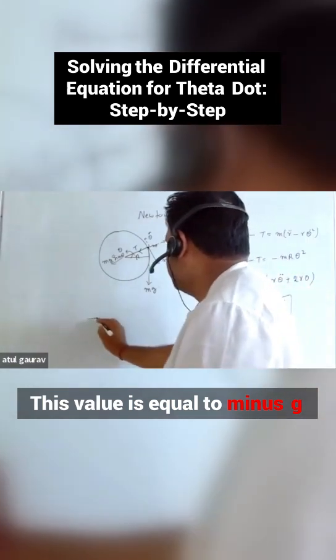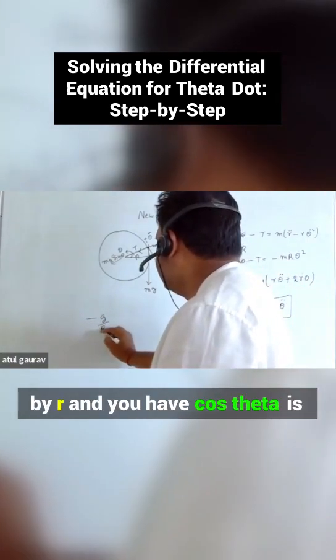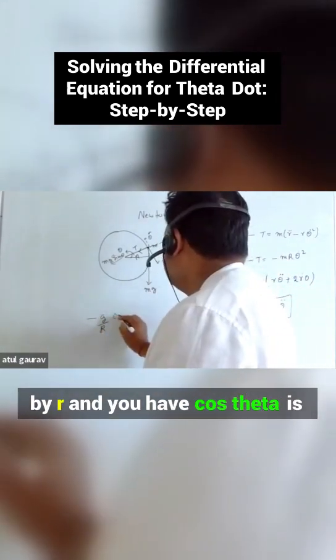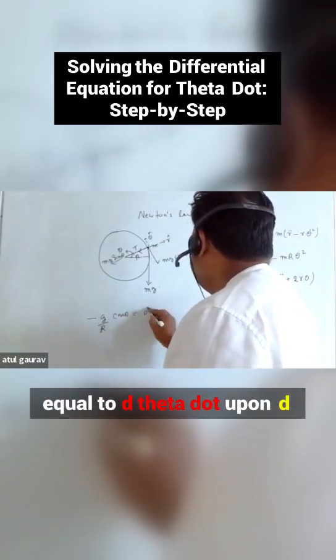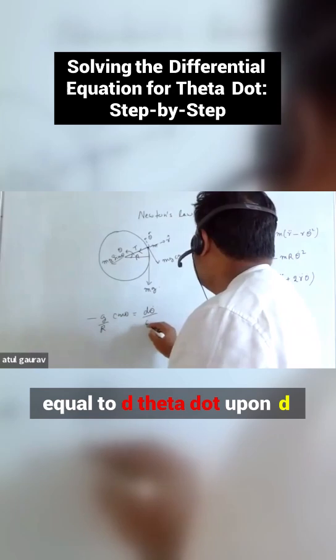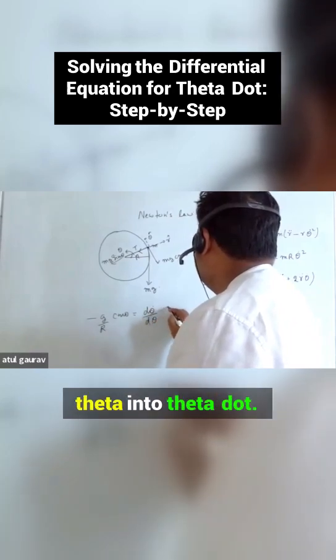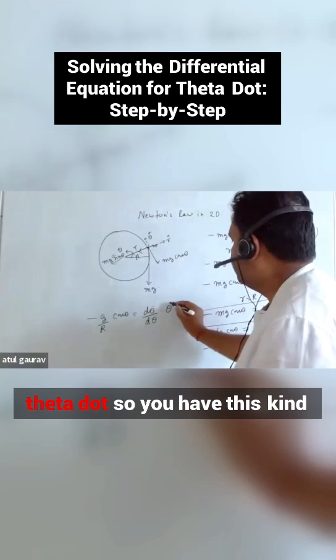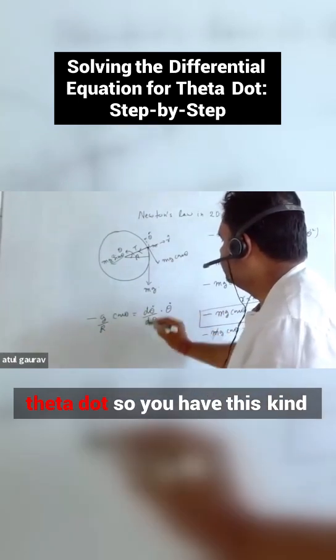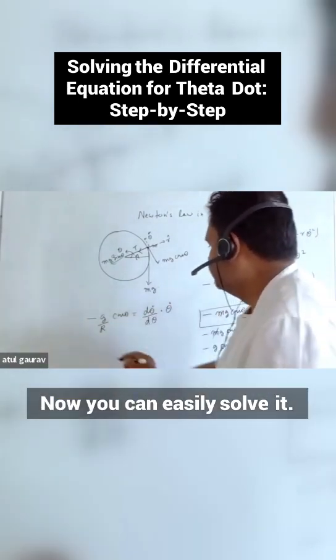This value is equal to minus g by r and you have cos theta equals d theta dot upon d theta into theta dot. d theta upon dt is what? theta dot. So you have this kind of situation. Now you can easily solve it.